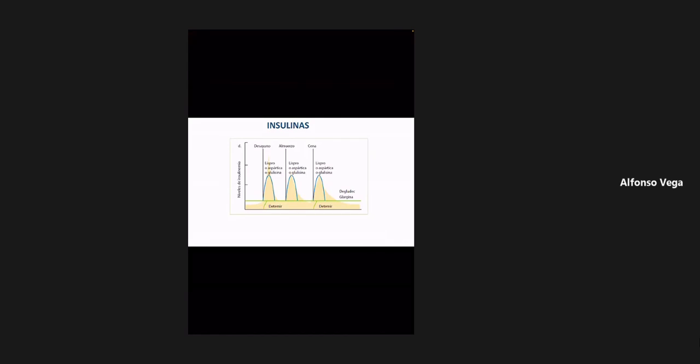En la imagen, fíjense cómo en la parte inferior de la pantalla hay una línea de color verde que trata de simular la secreción basal de insulina, que era lo que yo les comentaba en la ocasión anterior: primero intentamos mimetizar la secreción basal. Luego hay tres elevaciones en forma de montaña de color azul que son los picos de glucosa que anteceden al desayuno, a la comida y a la cena.